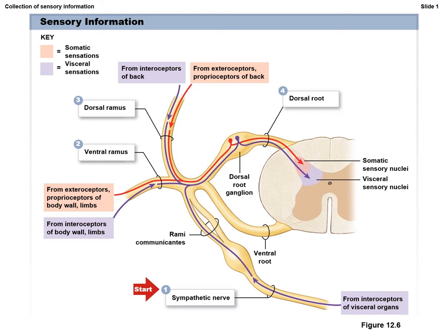Visceral sensory works a little differently and can come from one of three locations: interior receptors of the back, interior receptors of the body wall and limbs, or from the visceral organs. Starting from the visceral organs — for example, blood vessels relaying blood pressure information — it travels from the sympathetic nerve, to the sympathetic ganglion, to the rami communicantes, to the spinal nerve, to the dorsal root ganglion, and then to the visceral sensory nuclei. Interior receptors such as those in sweat glands would travel via the ventral ramus, to the spinal nerve, to the dorsal root ganglion, and then into the visceral sensory nuclei. This shows the different pathways sensory information can take through these structures.